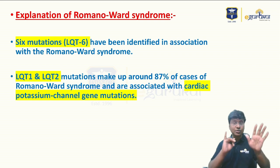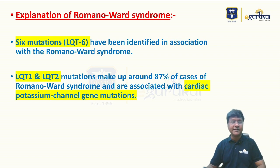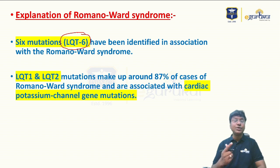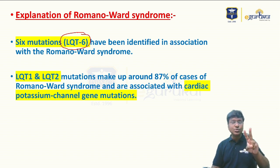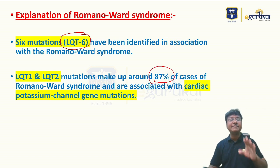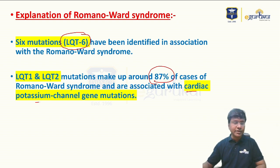Regarding Romano-Ward syndrome: there are six mutations identified in association with it. Out of the six, LQT1 and LQT2 make up around 87% of cases. The abnormality in these mutations is in the cardiac potassium channel gene.